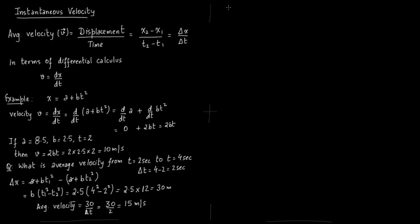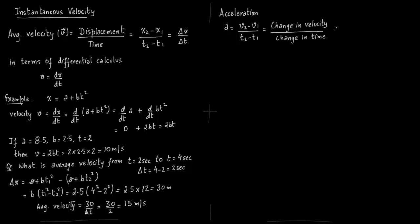Now we define acceleration. Acceleration is change in velocity over change in time — delta v divided by delta t. The units are meters per second divided by second, which gives meters per second squared as the units for acceleration.